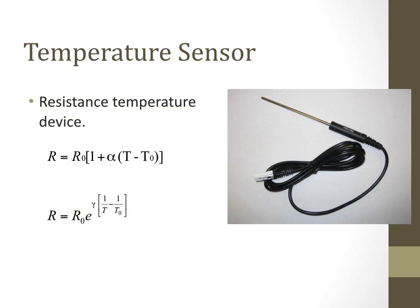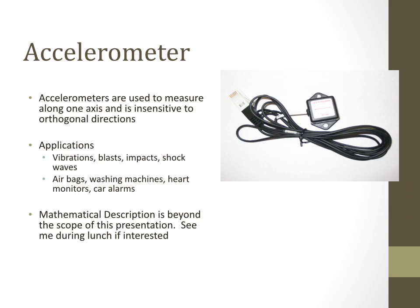An accelerometer measures along one axis and is insensitive to orthogonal directions. Applications include measuring vibration, blast impact, and shock waves — for example, measuring earthquake magnitude. Accelerometers are also used in washing machines and heart rate monitors, such as in smartwatches that check your heartbeat. Car alarms use accelerometers so that even small movement in the car's location triggers an alert, detecting vibrations or shock waves.